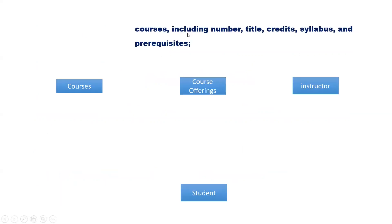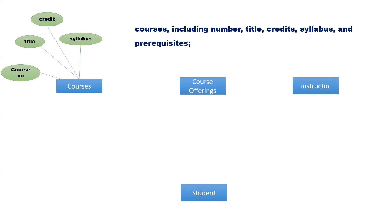Courses include number, title, credit, syllabus and prerequisite. That means the courses has attributes: course number, title, credit and syllabus. The prerequisite of one course is another course. Hence, we can model this as a recursive relationship.